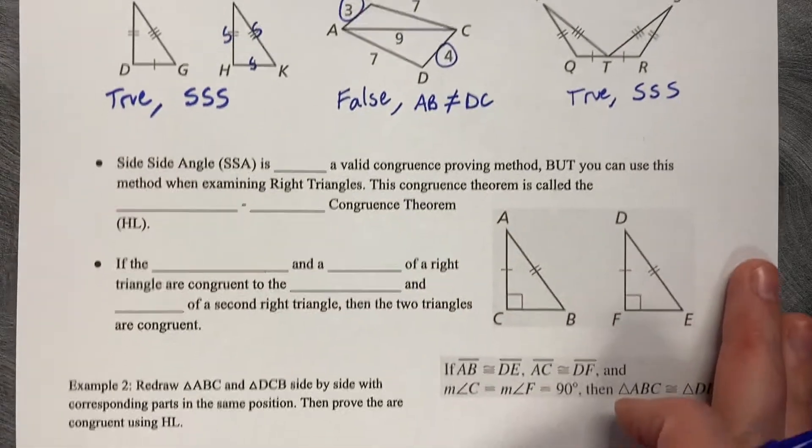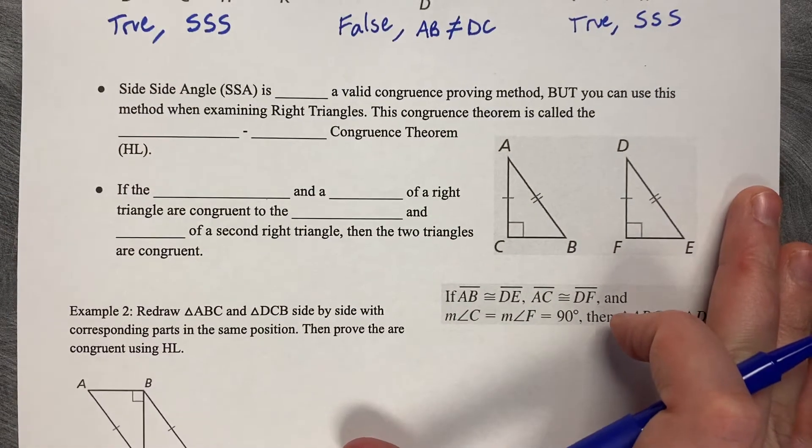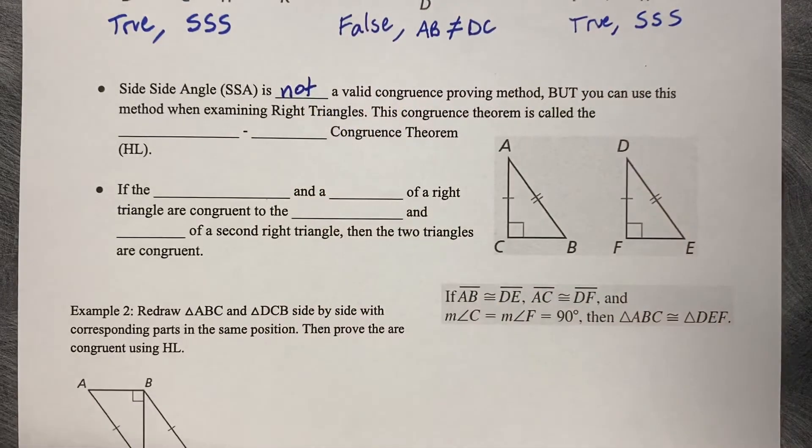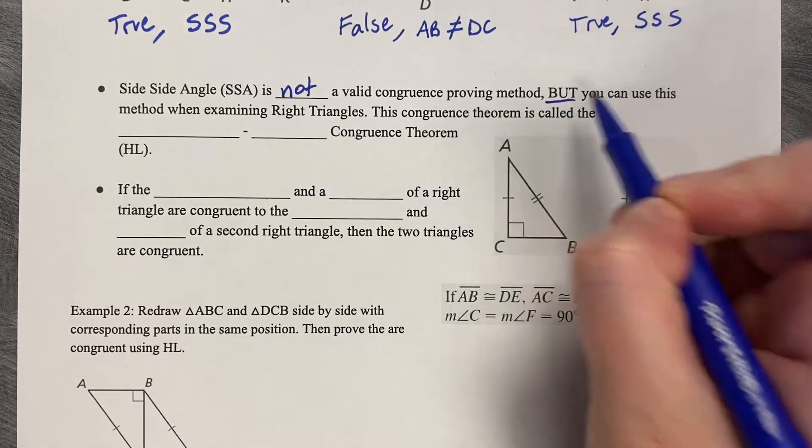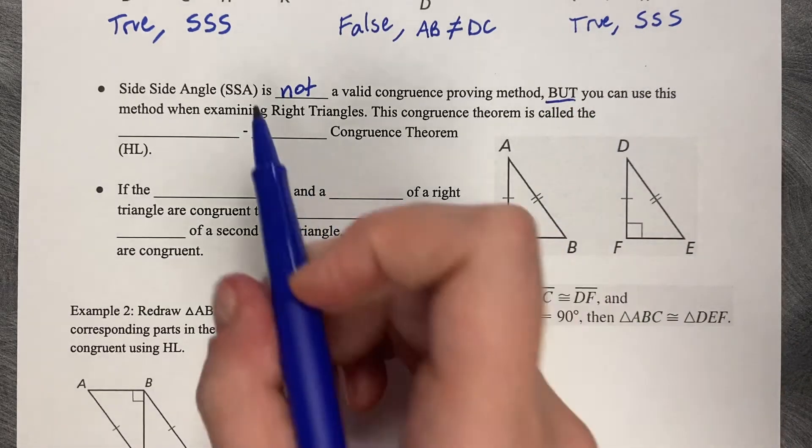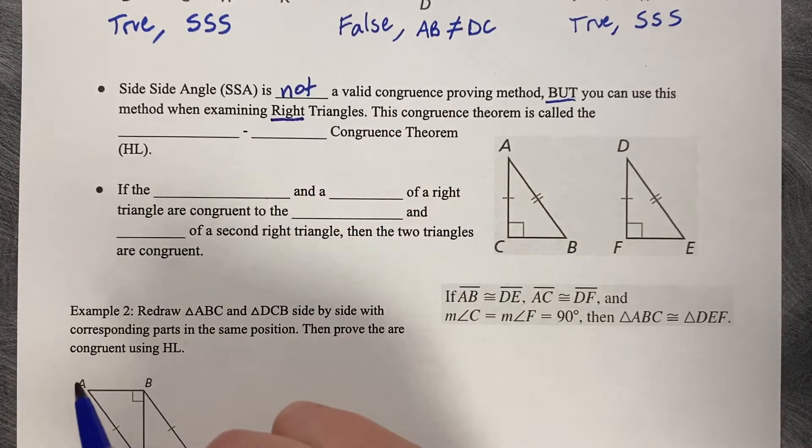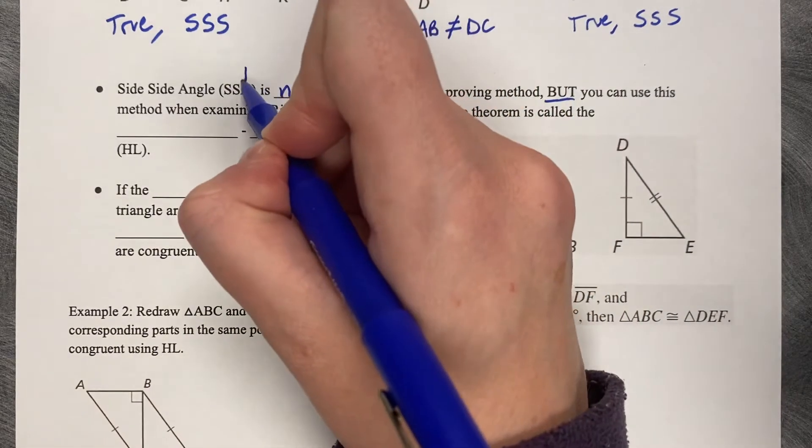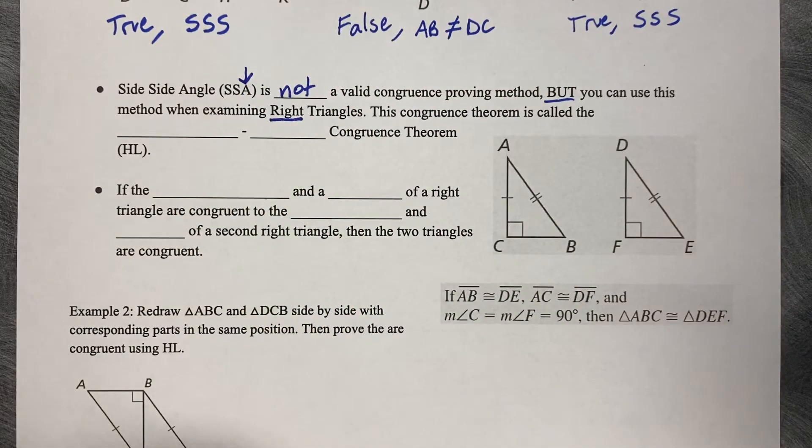Normally, side-side angle, or SSA, is not a valid congruence proving method. It's not enough to show that two triangles are congruent. But there is one angle that is an exception. You can use this method when examining right triangles. 90-degree angles are the only ones that make SSA become true, only if the angle is 90 degrees.